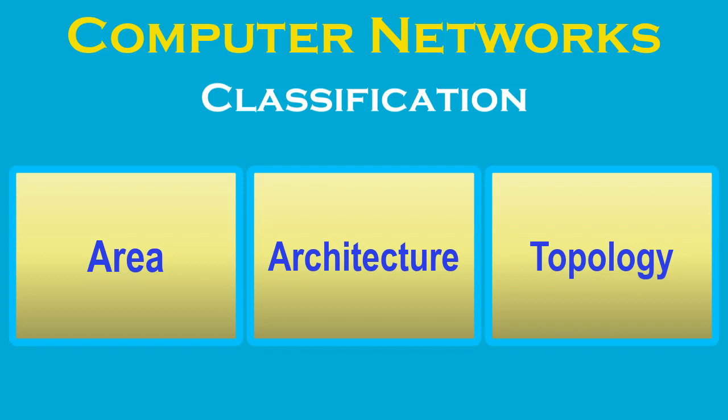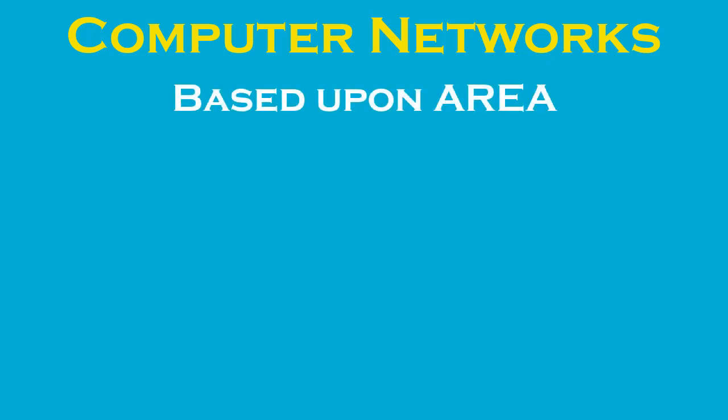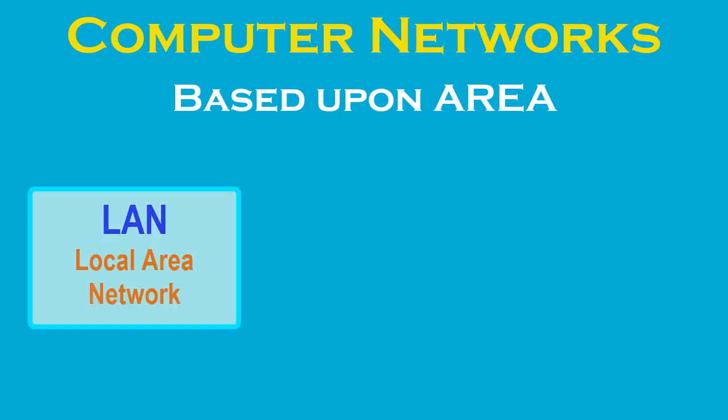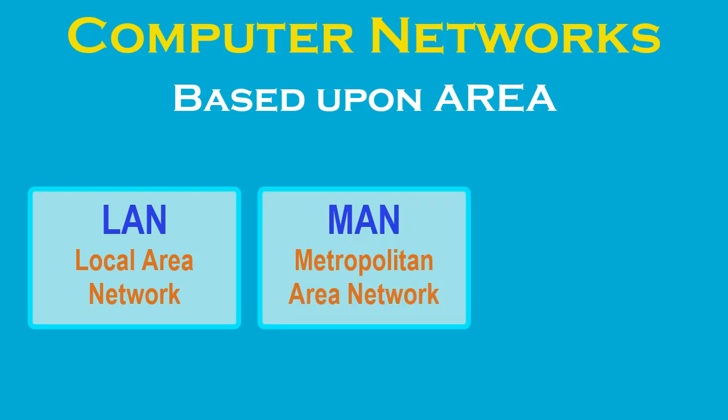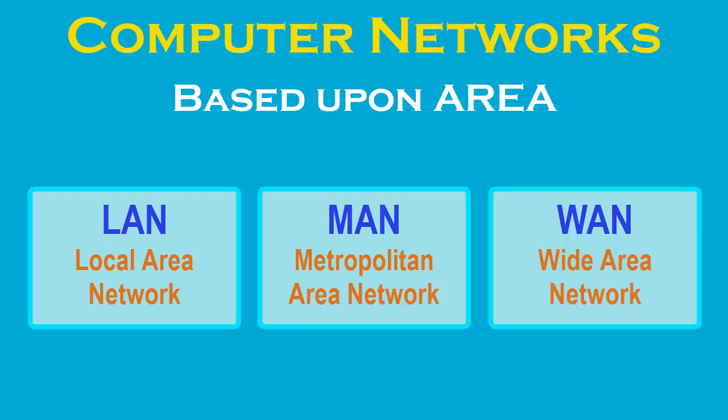A network can be classified into many types based upon area covered, based upon architecture, or based upon topology. Based upon area covered, a network is divided into three types: LAN which stands for Local Area Network, MAN which stands for Metropolitan Area Network, and WAN which stands for Wide Area Network.